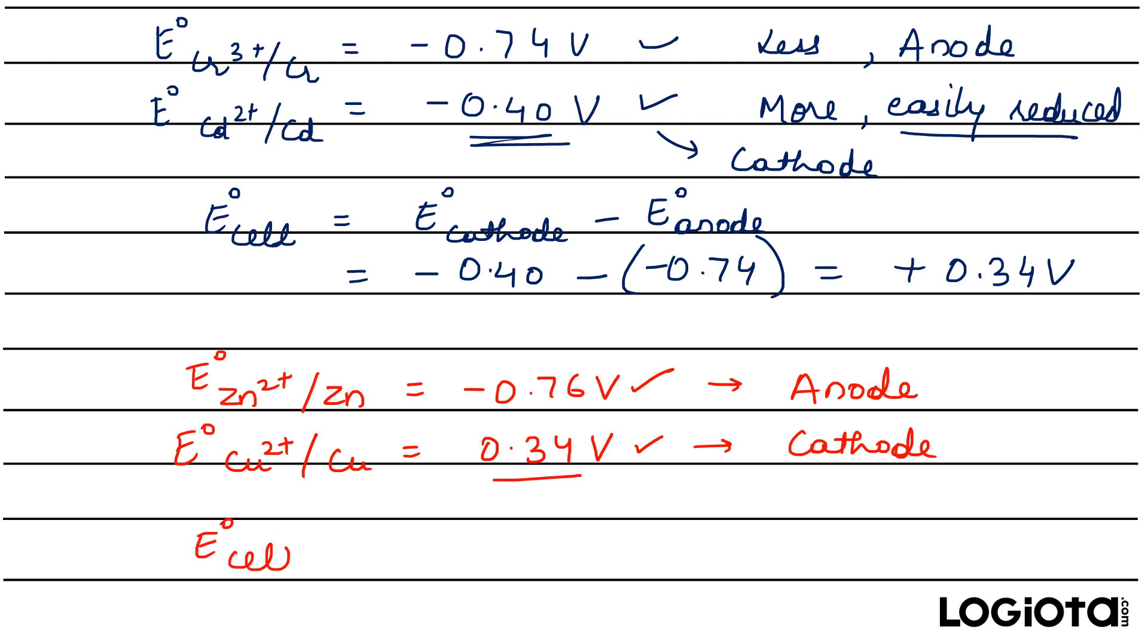And here also we can easily find the E° of cell. So E° of cell will be equal to cathode minus anode, so it will be 0.34 minus -0.76. On solving this we get the answer as 1.10 volts. So this is very easy, you can easily predict which one is cathode and which one is anode by just seeing the reduction potentials of the electrodes.